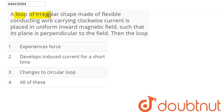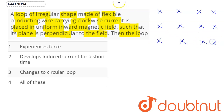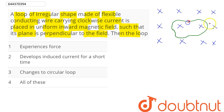The question is: a loop of irregular shape made of flexible conducting wire carrying clockwise current is placed in a uniform inward magnetic field such that its plane is perpendicular to the field. Here we can see the magnetic field is inward and perpendicular to the plane of the loop, and an irregular shaped loop is placed in this magnetic field region where the magnetic field is uniform and constant, with current flowing in the clockwise direction.